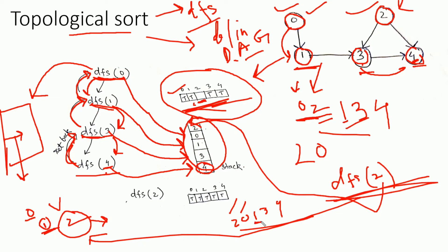Vertex 1 is only dependent on vertex 0. Since vertex 0 is already processed, we can process vertex 1. Vertex 3 is dependent on 1 and 2, both of which are already processed, so vertex 3 is next. Finally, vertex 4 is dependent on 2 and 3, both already processed, so vertex 4 can be processed. The conclusion is that independent jobs need to be processed first before dependent jobs, and topological sort is only applicable to directed acyclic graphs.